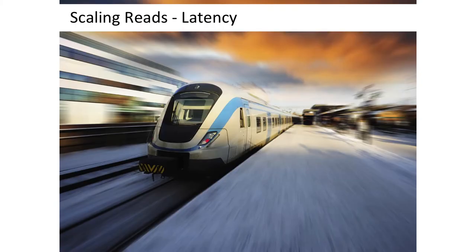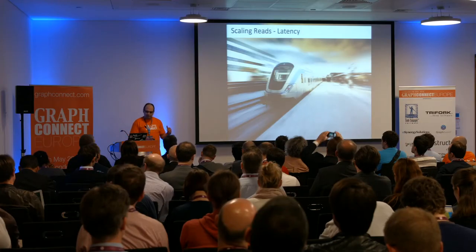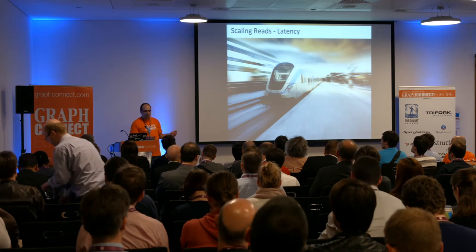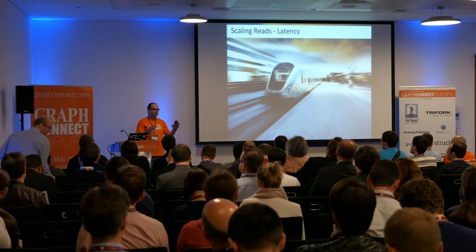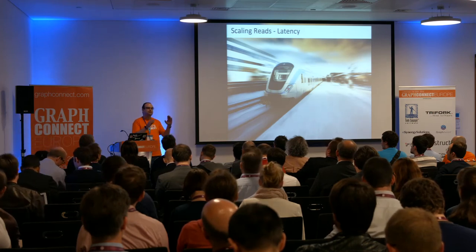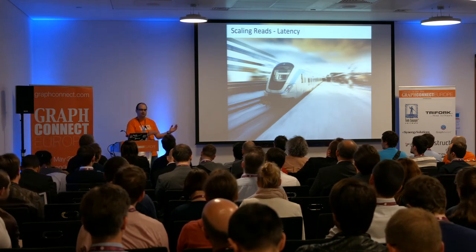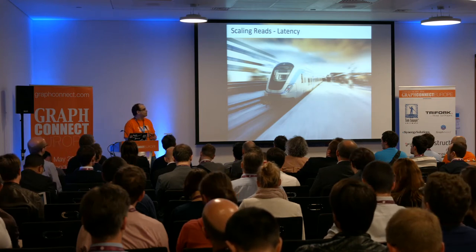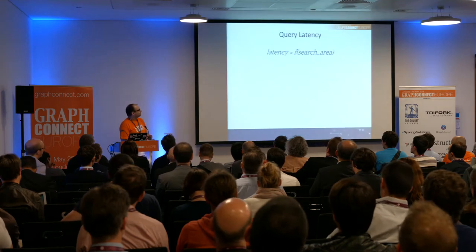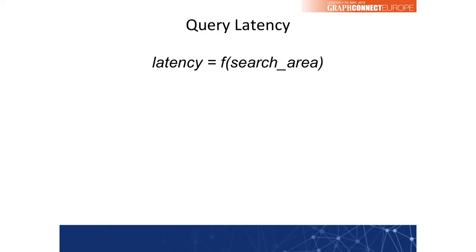Scaling reads is mostly about latency. In relational databases, when you do complex joins, in the best case scenario the join scales logarithmically to the dataset size because internally they build a binary tree for the join. In a graph world, as relationships are stored locally with nodes, a query is independent of the graph size. The latency of a query is typically a function of the search size — the amount of nodes you visit during a query.